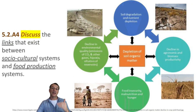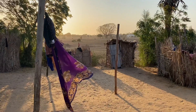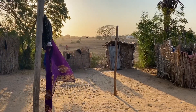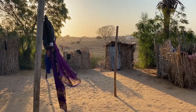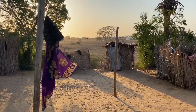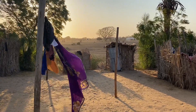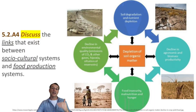Food production is deeply connected to social and cultural systems. For example, poor soil health can lead to low crop yields, which then results in food insecurity and poverty. This in turn makes it harder for farmers to invest in improving their soil, and the cycle continues. Understanding these connections is really important for developing sustainable food systems that not only produce enough food, but also support people's well-being.